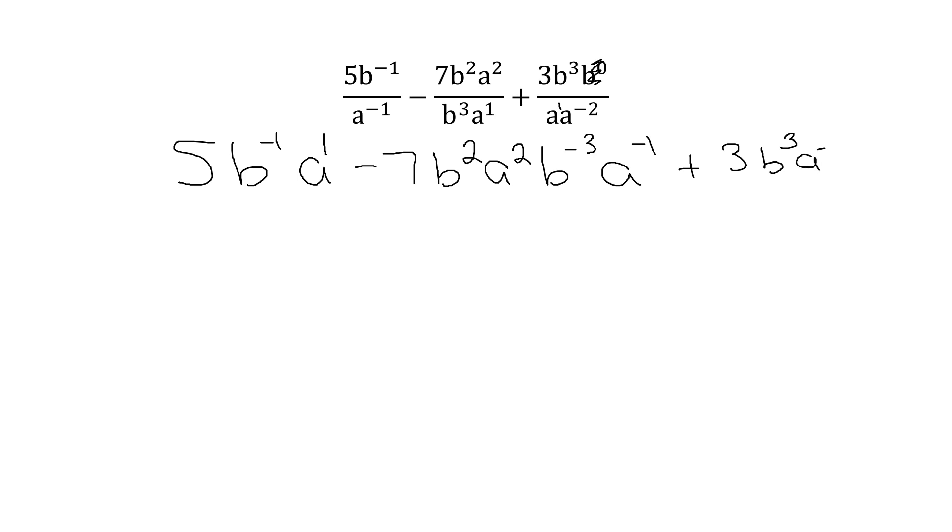When I bring my a understood 1 up, I will tell you people lose that 1 a lot. Because they don't have it written there, so they don't see it. My negative 2 becomes positive. So anything from the bottom, move it to the top, and the sign of the exponent changes.